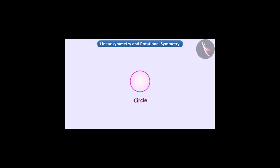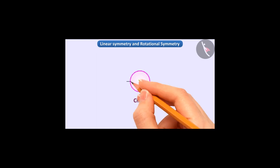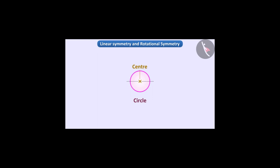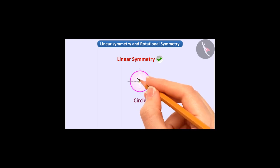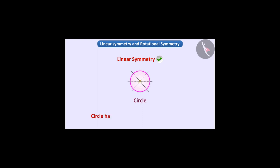Now let's talk about this shape — it is a circle. There are infinitely many points on the circle. If we draw any line from the centre of the circle, that line divides the circle into two equal parts which are mirror reflections of each other. In this way, the circle has linear symmetry, and infinitely many lines can be drawn from the centre. So we can say that the circle has infinitely many symmetrical lines.